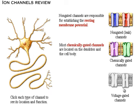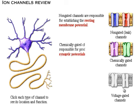Most chemically gated channels are located on the dendrites and the cell body. Chemically gated channels are responsible for producing synaptic potentials. Synaptic potentials will be studied in the last section of this module.